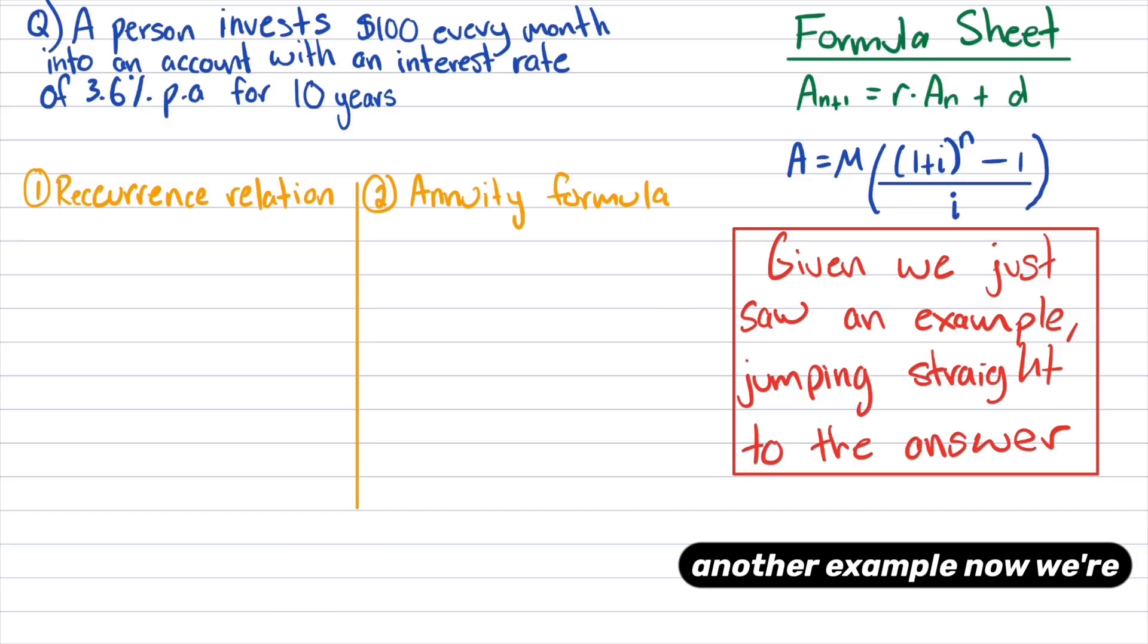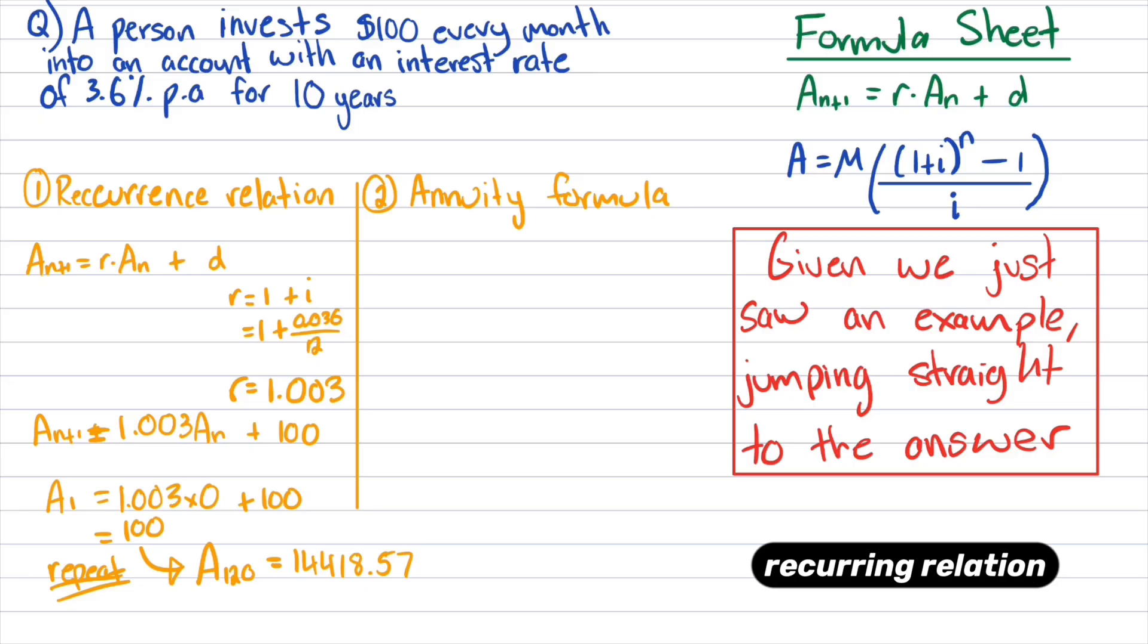So another example now, we're going to use the annuity formulas. So we've got a person who invests $100 every month into an account with an interest rate of 3.6% for 10 years. So because we've just done an example, I'm jumping straight to the answer here. So I'd use my recurrence relation formula. I'd find R, I know that my D value in this case, my deposit amount is 100.